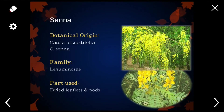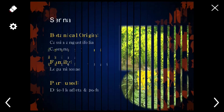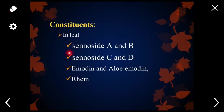The next example of anthraquinone glycosides is Senna. Botanical name: Cassia angustifolia, Cassia senna; family Leguminaceae; part used: dried leaflets or pods. The different chemical constituents present in Senna leaf are sennoside A and B, sennoside C and D, emodin, aloe-emodin, and rhein.